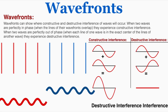Wavefronts can show where constructive and destructive interference of waves will occur. When two waves are perfectly in phase they experience constructive interference, and when two waves are perfectly out of phase they experience destructive interference.